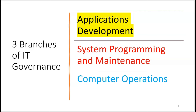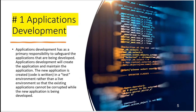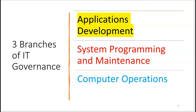Anyone on the computer operations team should not be working with system programming or applications development. We're going to start with applications development — we'll see who we expect to find on that team and what their roles are — and then move on to system programming and maintenance, and then computer operations.